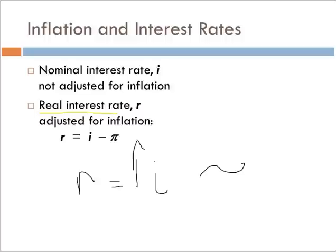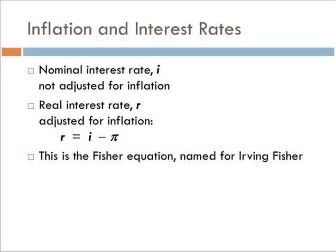The inflation rate is how much the value is being diminished by increases in prices. So if I take the upward movement minus this downward movement, I get approximately what the real change in purchasing power is over time. This is called the Fisher equation, named for Irving Fisher. For right now, just realize that the real interest rate is approximately equal to the nominal interest rate minus the inflation rate.